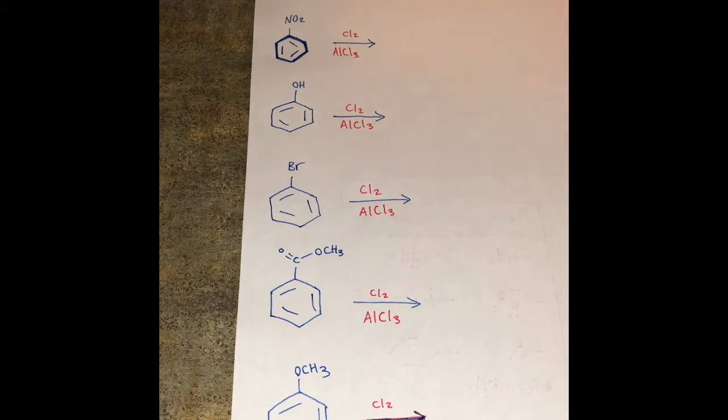Let's do some reactions with some ortho, para, and meta directors. So these are again the EAS reactions. And you can see that we're gonna do the same reagents in each of these steps, but depending on what group we have in our benzene we can get different outcomes.